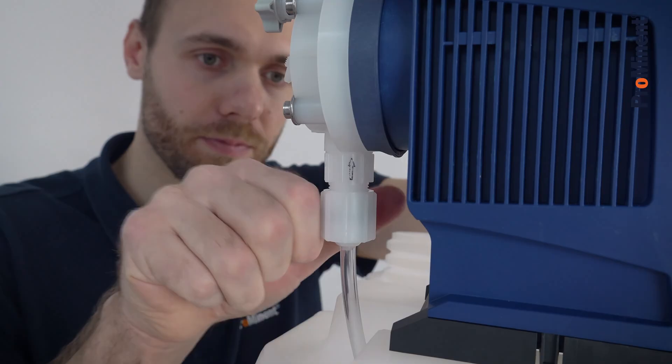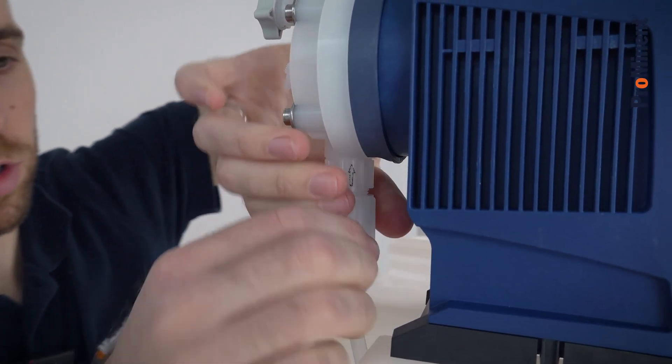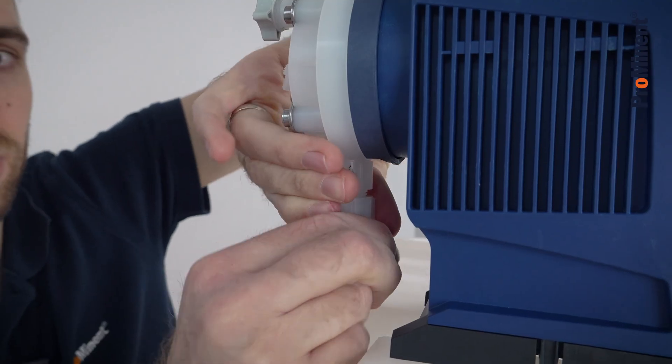The foot valve is taking care that the suction tube is always at the bottom of the tank and also it includes a filter.